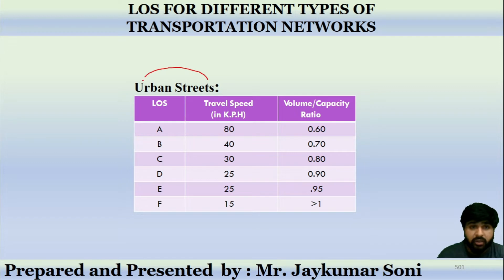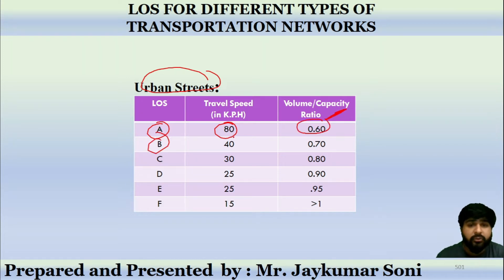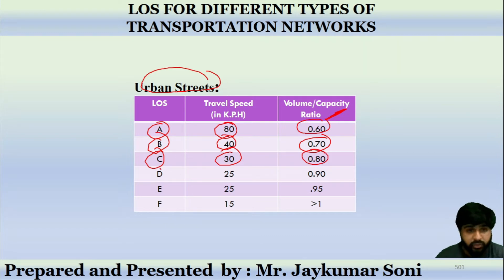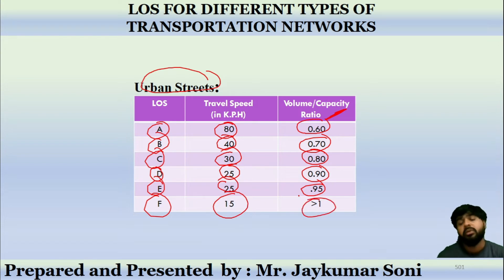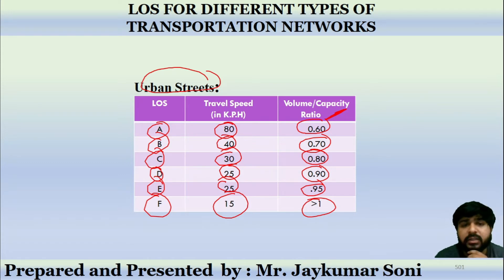For urban streets: LOS A has 80 km/h speed with a volume-to-capacity ratio of 0.60; B has 40 km/h and 0.70; C has 30 km/h and 0.80; D has 25 km/h and 0.90; E has 25 km/h and 0.95 volume-to-capacity ratio; and F has 15 km/h with a ratio greater than 1.0. These are the key criteria for urban streets.